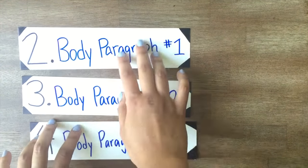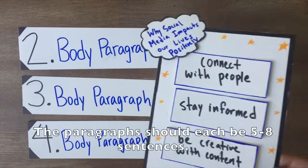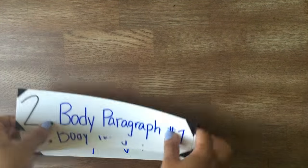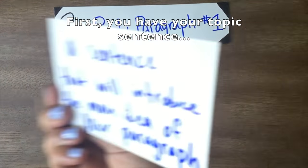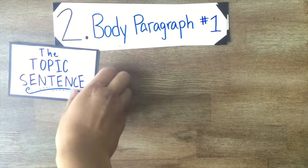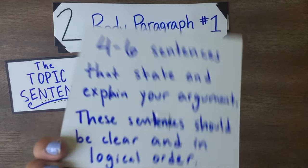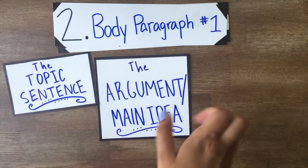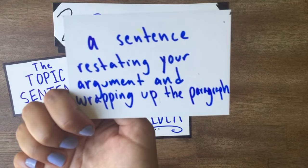Let's move on to the body paragraphs. Each body paragraph will explain one of the main ideas that we laid out in the framework. The paragraphs should each be five to eight sentences. First, you have your topic sentence — a sentence that introduces the main idea of the paragraph. Second, most of your paragraph will be the argument itself in four to six sentences that state and explain the main point, which should be clearly written and in logical order. Finally, a conclusion sentence restates your argument and wraps up the paragraph.